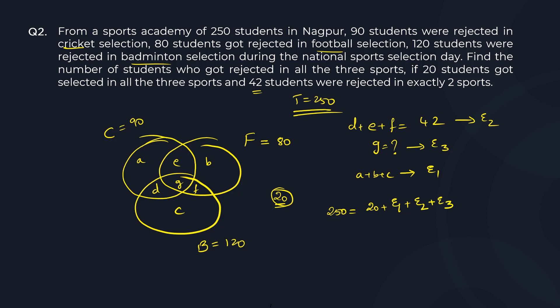So now I already have value of exactly two, which is 42. So 42 plus 20 is 62. So my exactly one plus exactly three total should be 250 minus 62. So how much would this be? 200 minus 12, which is 188. This is one equation.